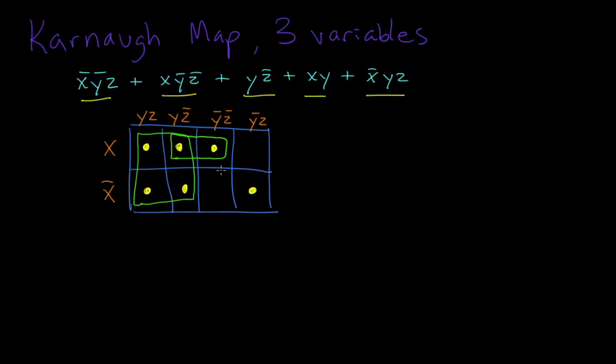The next box I see is the one that covers these two dots. Remember, we want to make the boxes as big as possible, so we wouldn't just circle this one by itself. We'd want to make this box a one-by-two box, and overlap is okay.